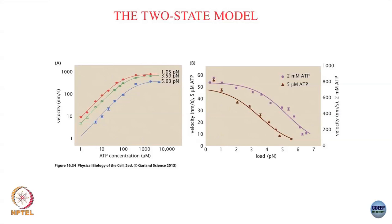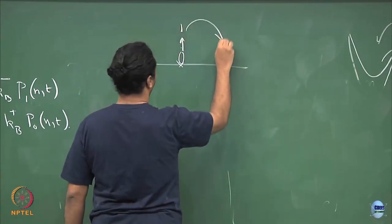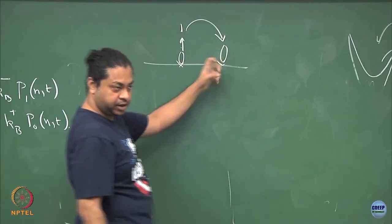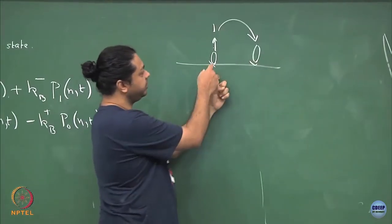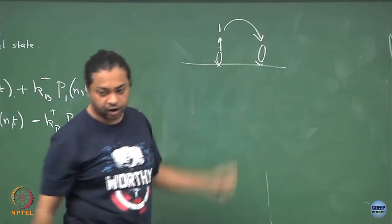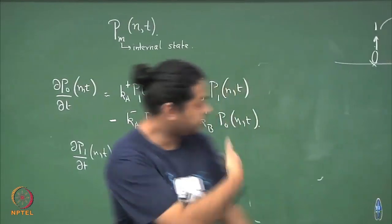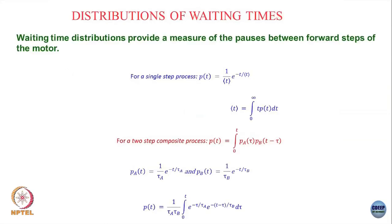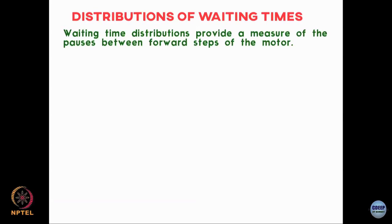This two-state model does a fair job of explaining the experimental data. However, you can also ask whether there are more direct signatures — direct evidence that multiple internal steps are happening. The model says that to step forward, the motor is in state 0, transitions to state 1 on the same site, and then hops forward changing from 1 to 0. Can we observe these internal steps more directly? Yes — by looking at distributions of waiting times, which provide a measure of the pauses between forward steps.